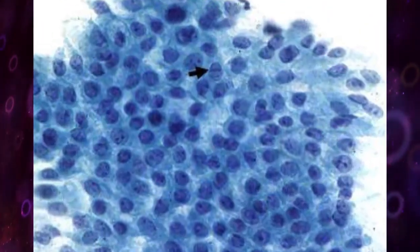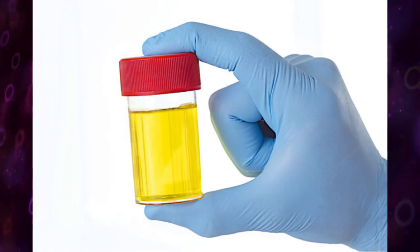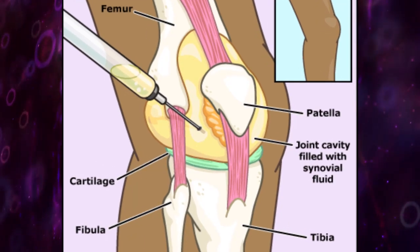Cytologic examinations most of the time are performed on body fluids such as blood, urine, and cerebrospinal fluid, or on material that is aspirated from the body.